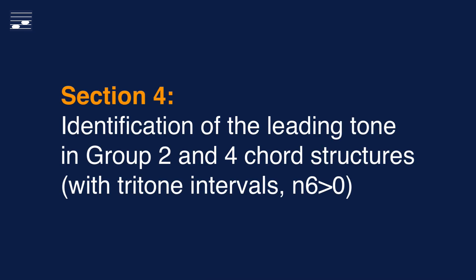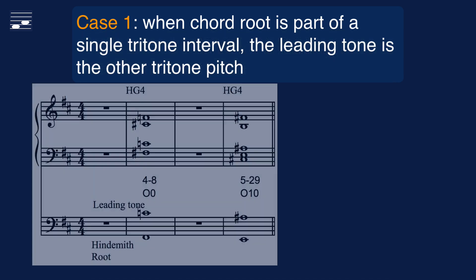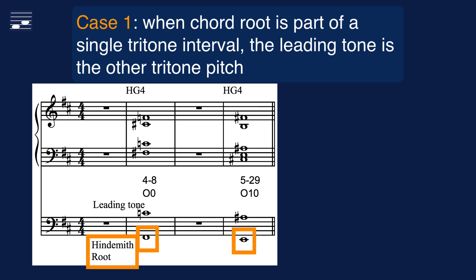The main division criterion in the Hindemith scheme is the presence of the tritone interval. Chords in groups 2 or 4 have a non-zero value of N6 in the interval class vector. These tritones contain a leading tone that must be identified from the structure. Hindemith discerns three cases that I will discuss after playing examples. In previous episodes I demonstrated how to find the root of the structure by looking at the lowest best interval in the structure — for instance the root of the lowest perfect fifth. When the root also is part of a tritone interval, the other pitch is the leading tone.